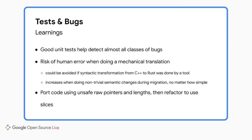I believe this part of the presentation has many learnings. The first is that good unit tests help detect almost all classes of bugs, so test coverage is important — it might make sense to write more unit tests before starting the migration. The second learning is that the risk of human error when doing a mechanical translation is non-zero. Note that I had three to four careful reviewers on every commit. I believe these errors could be avoided if the syntactic transformation from C++ to Rust was done by a tool. This risk increases when doing non-trivial semantic changes during the migration, no matter how simple — one example is using slices instead of raw pointers and length.